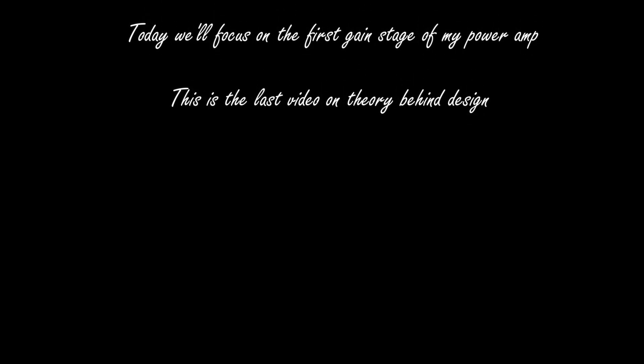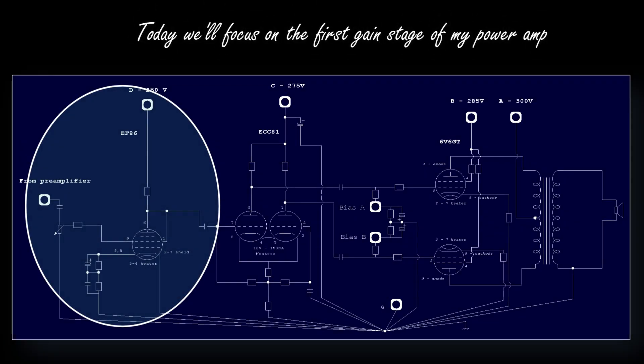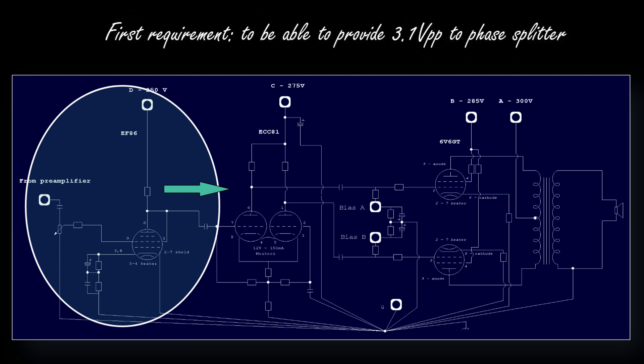So let's now focus on the main scope of this video, which is the description of the theory behind the first gain stage of my future hi-fi power amplifier. I need a maximum signal of 3.1 volt peak-to-peak to be fed to the following stage, which is the phase splitter. The role of this first gain stage is to accept an input signal coming from the preamplifier and amplify that signal to drive the power amplifier at maximum power.